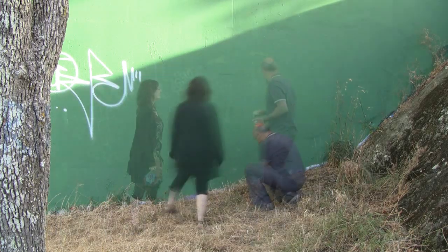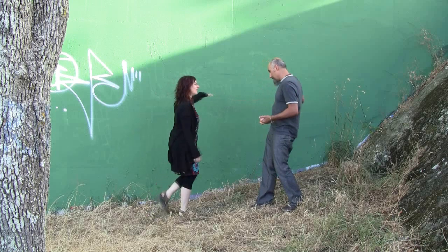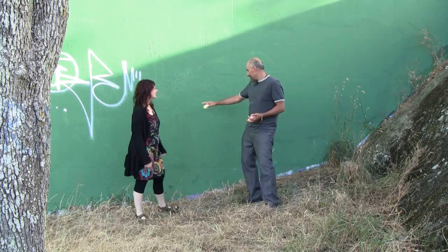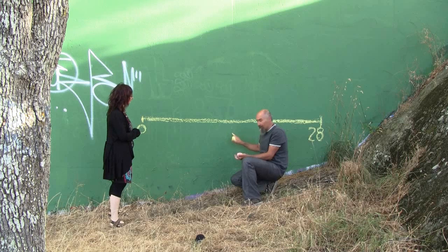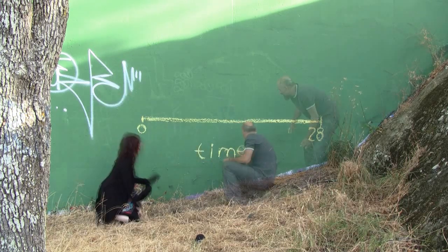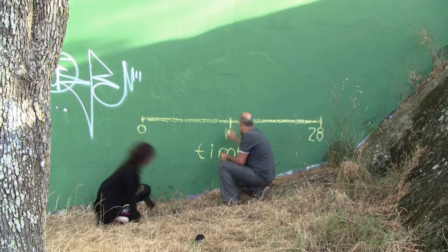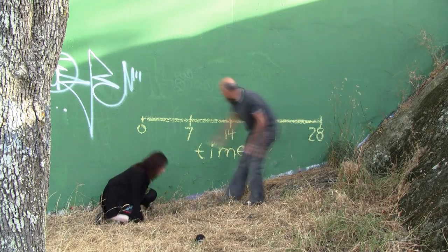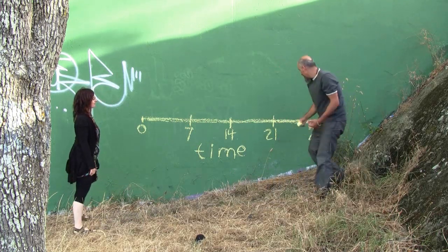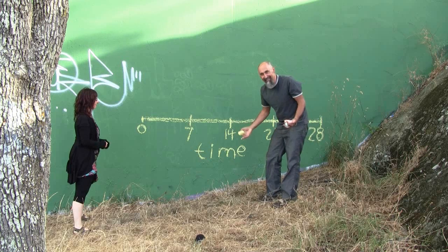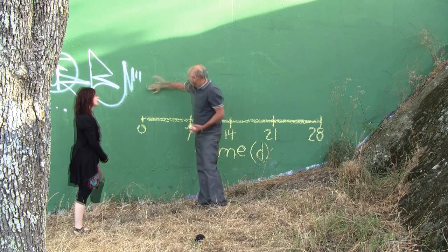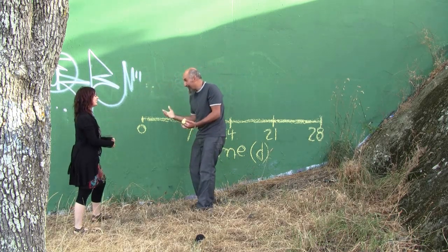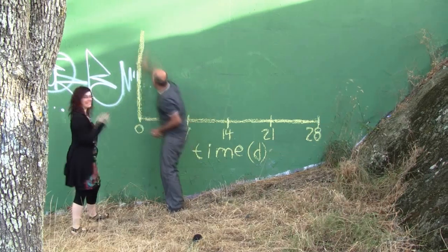We're going to do 28 days on the horizontal axis — the x-axis. This is now our x-axis, and it represents time. We're going to cut it in half: so that's 14 days, 7 days, 21 days — four weeks: one week, two weeks, three weeks, four weeks. Time is in days. For the y-axis, we're going to label it 'stuff is happening.'